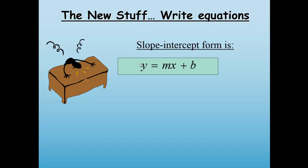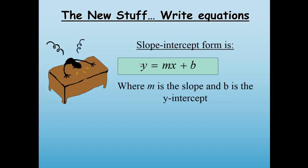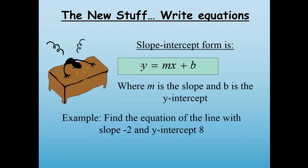We know that slope-intercept form is y equals mx plus b, where m is the slope and b is the y-intercept. Now, let's say we have a slope and a y-intercept and we are tasked to find the equation of the line.